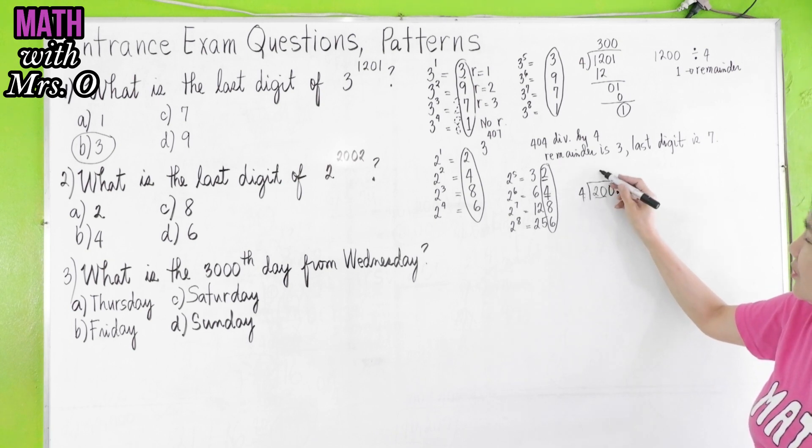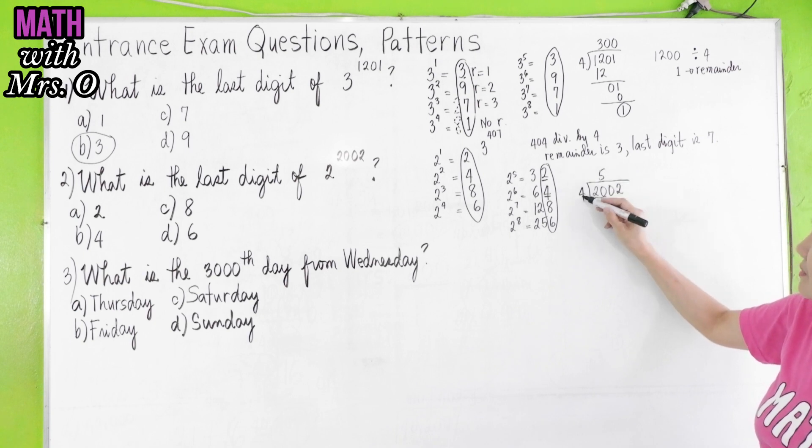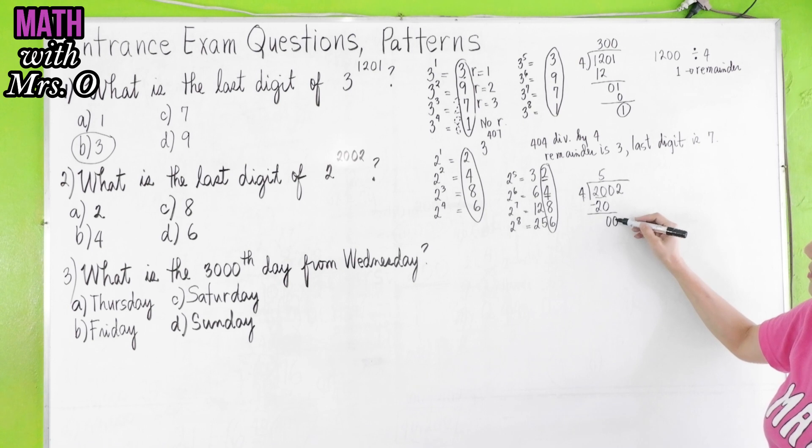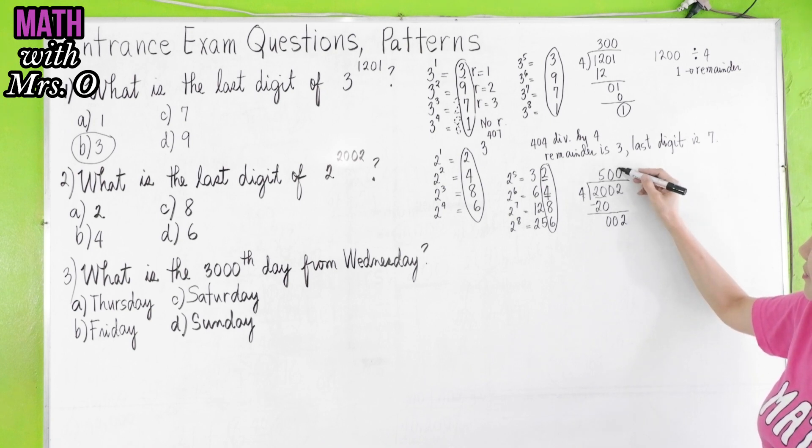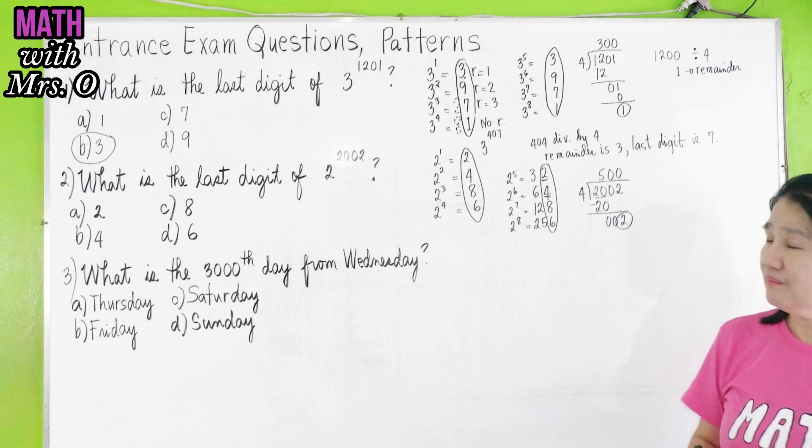20 divided by 4 is 5. 5 times 4 is 20. Subtract, you get 0. Then this is 0. Bring down 2. Then 0. So you have a remainder of 2.